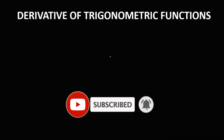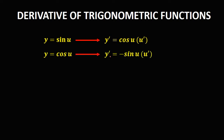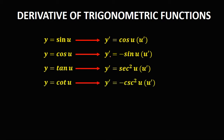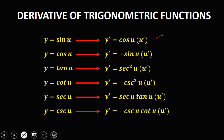Let's have this topic: the derivative of trigonometric functions. These are the derivatives of six trigonometric functions. For sine u, it's cosine u times the derivative of u. For cosine u, that's negative sine u times the derivative of u. For tangent u, that's secant squared u times the derivative of u. For cotangent u, that's negative cosecant squared u times the derivative of u. For secant u, it's secant u times tangent u times the derivative of u. For cosecant u, it's negative cosecant u times cotangent u times the derivative of u.